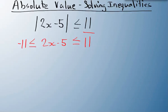Now I can take this and start solving. I'm going to add 5 to all the parts. So we end up with negative 6 less than or equal to 2x, which is less than or equal to 16.